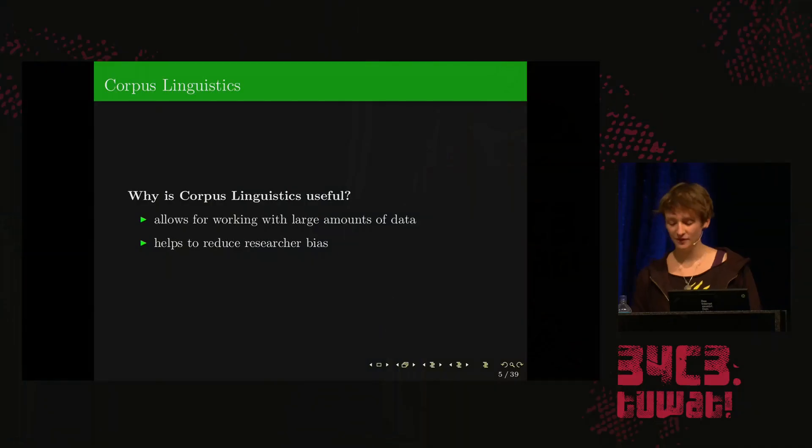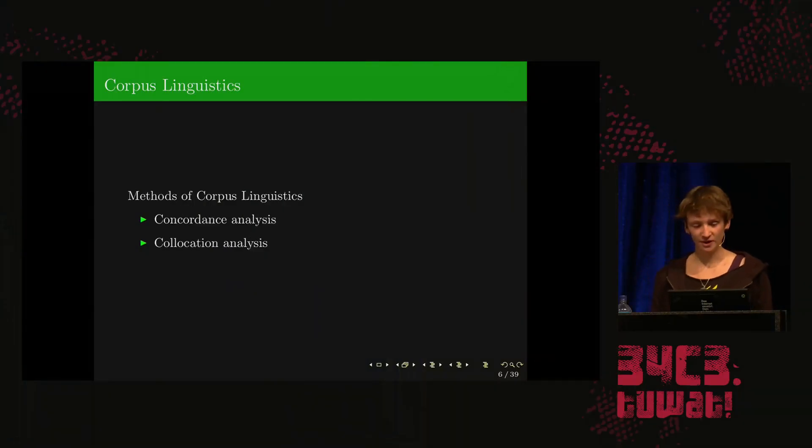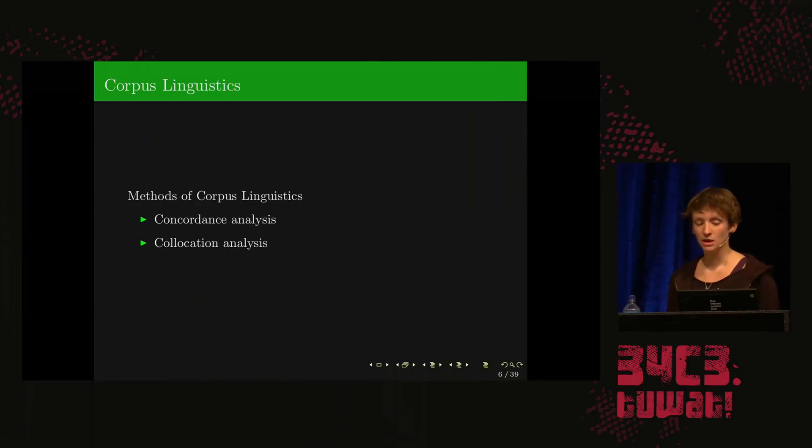Corpus linguistics also helps to reduce researcher bias. There is a tendency for researchers to pay more attention to things they encounter at an earlier stage of research than at a later stage. If you're working with millions of words, it's a lot harder to be biased about your results compared to if you only worked with two or three newspaper articles which you had to analyse by hand.